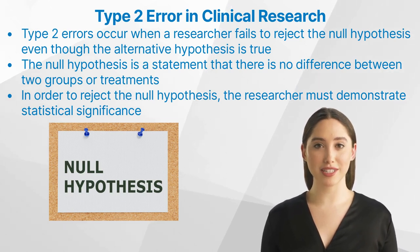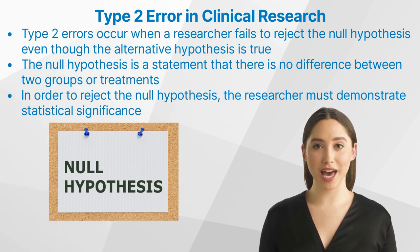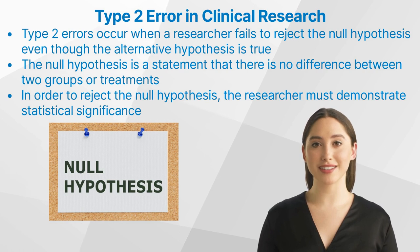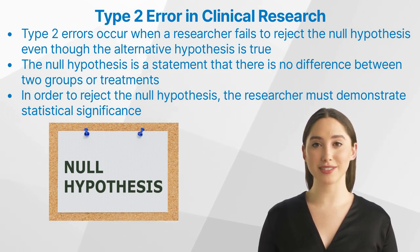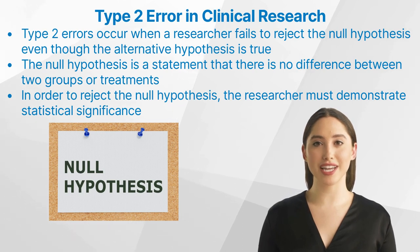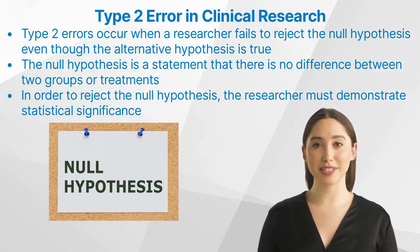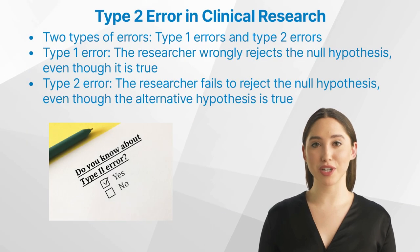Statistics play an important role in clinical research as they help researchers make sense of data and draw conclusions from it. In order to draw valid conclusions, researchers must first establish a null hypothesis and determine whether or not it can be rejected. In most cases, the null hypothesis is a statement that there is no difference between two groups or treatments. To reject it, the researcher must demonstrate statistical significance, meaning the observed difference is unlikely to be due to chance.